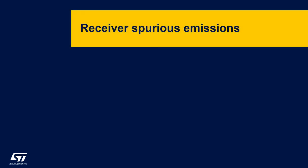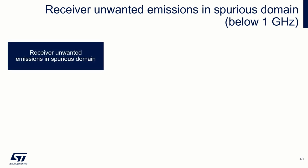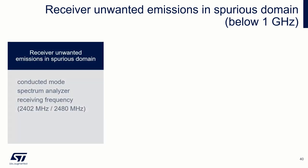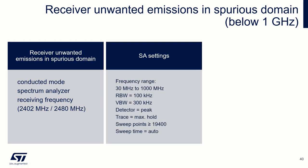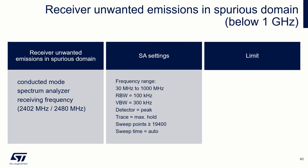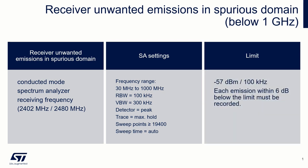We are now moving to receiver parameters. This measurement is very similar to the transmitter spurious emissions, with the same settings — the device only needs to be in receive mode. It can be divided into two subbands. For the band below 1 GHz, the same settings apply, but the limit is now minus 57 dBm over 100 kHz. All emissions closer than 6 dB to the limit must be recorded and subsequently measured in the time domain.